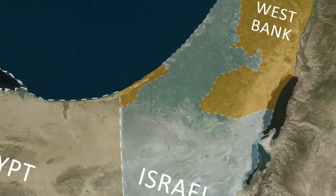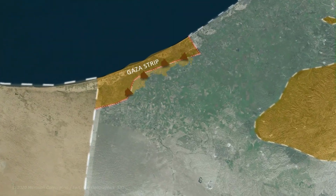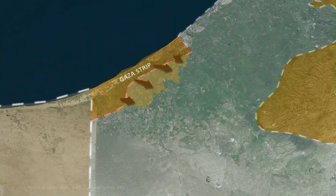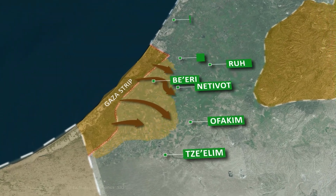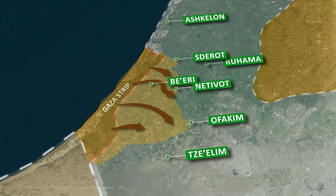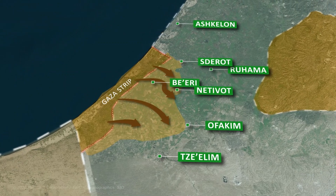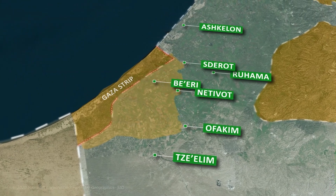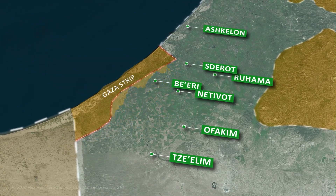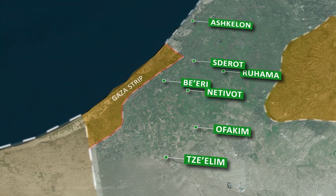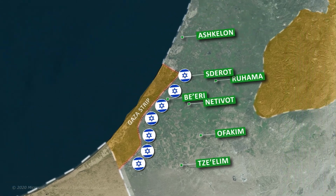On October 7, Hamas militants broke through the fence surrounding the Gaza Strip and entered Israeli territory, attacking the small communities near the border. In the days that followed, Israel pushed back the Hamas militants and started to mass hundreds of troops near the Gaza Strip in preparation for the invasion.